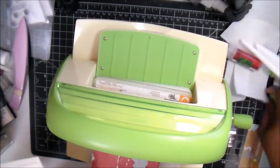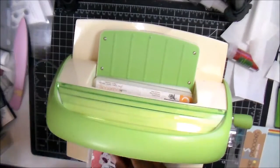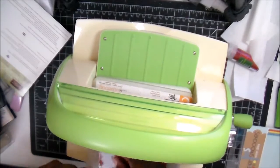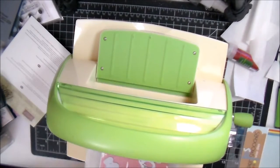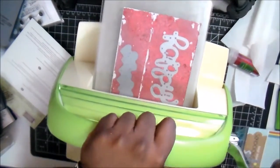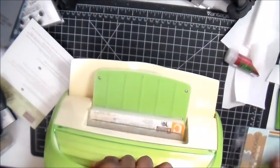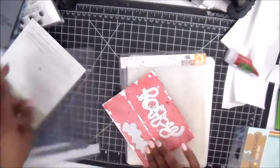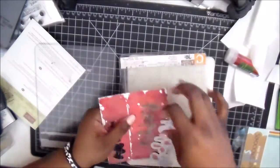So now we're going to cut it out using our Cuttlebug. I'm cutting both at the same time—the hearts, the connecting hearts. There are linked hearts actually from Paper Smooches I got in the boutique, and then this is a word die that I have in my stash and it's just 'happy'.